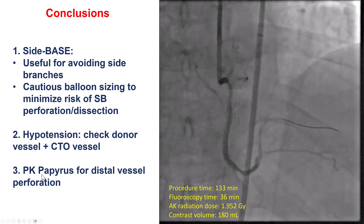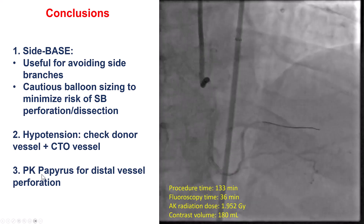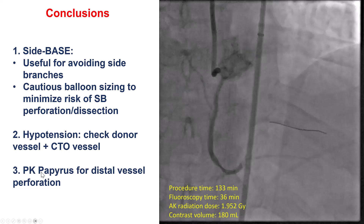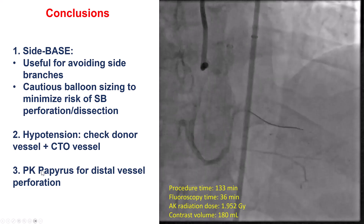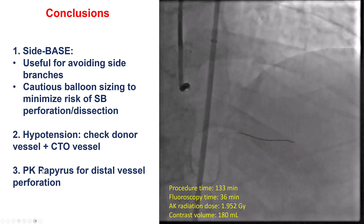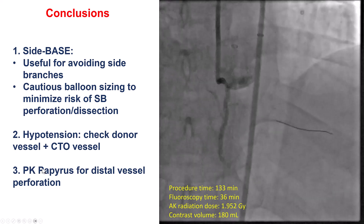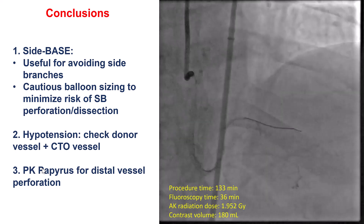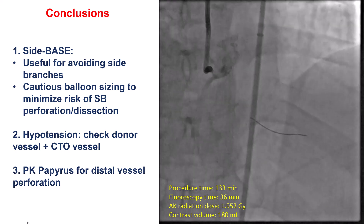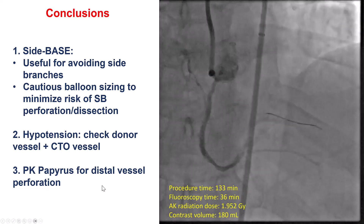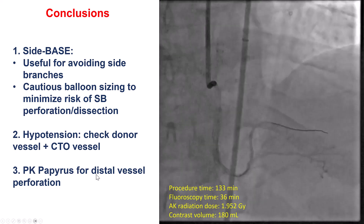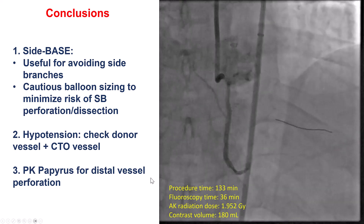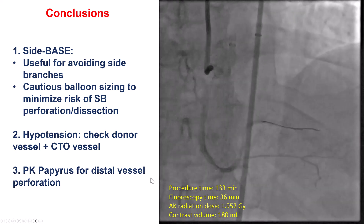And lastly, the PK Papyrus stent remains the one we use when there is a large vessel perforation, but it can also be used for side vessel perforations when it is difficult or undesirable to coil the side branch that has perforated, as was the case in our patient. Thank you so much.